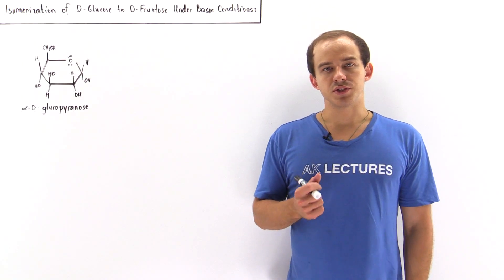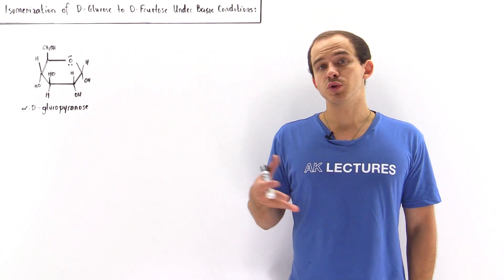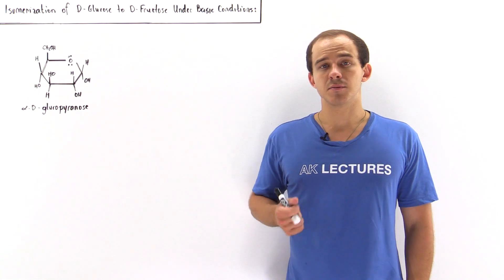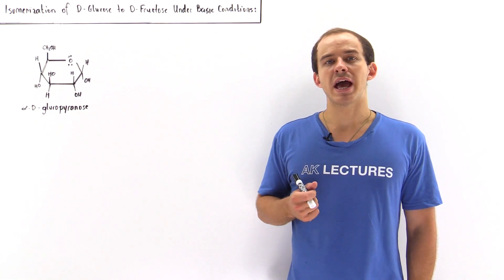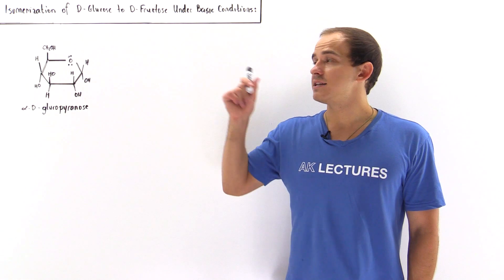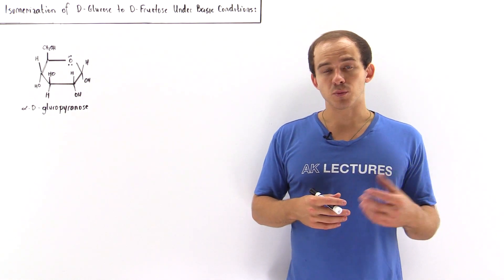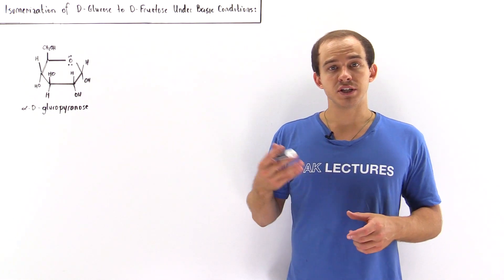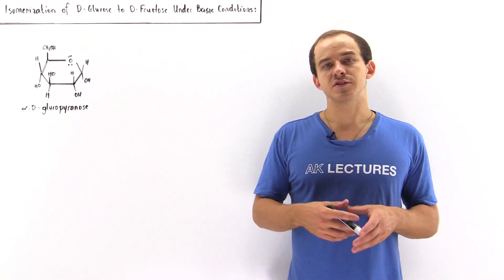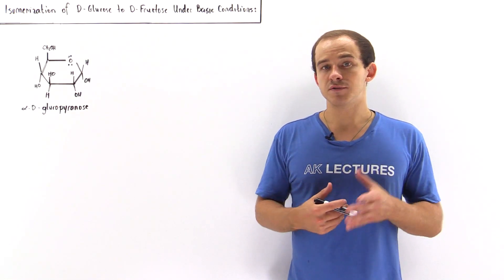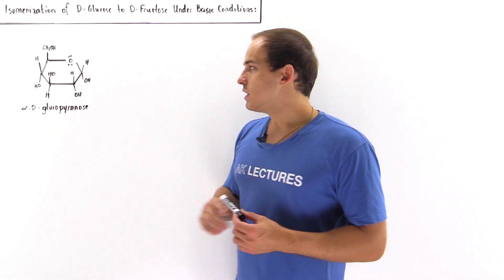Under basic conditions, any carbohydrate can transform into a different isomer of that same carbohydrate. This reaction is known as the isomerization reaction. Previously, we discussed the isomerization of D-glucose into D-mannose. Now, let's discuss the isomerization of D-glucose into D-fructose.